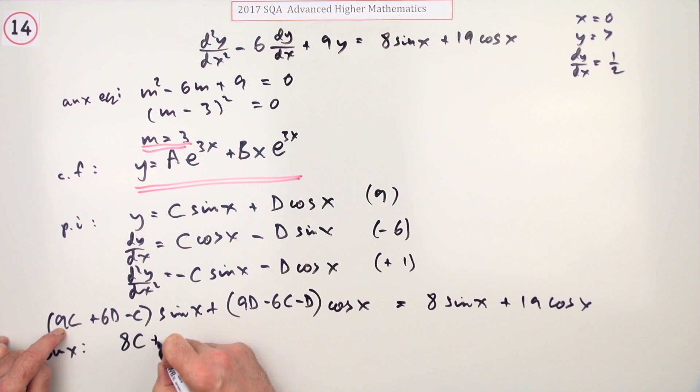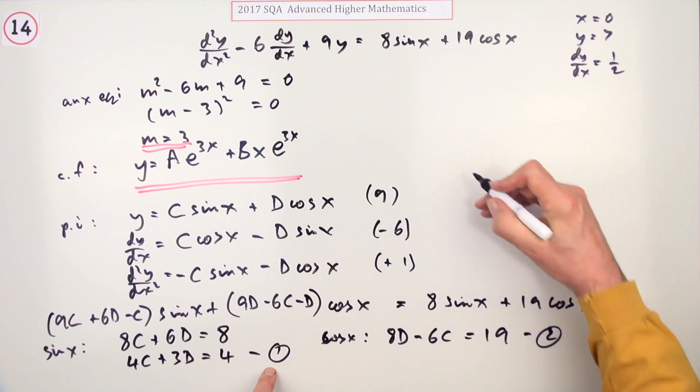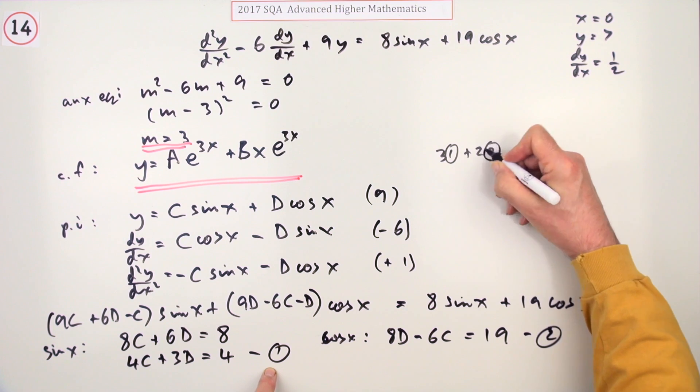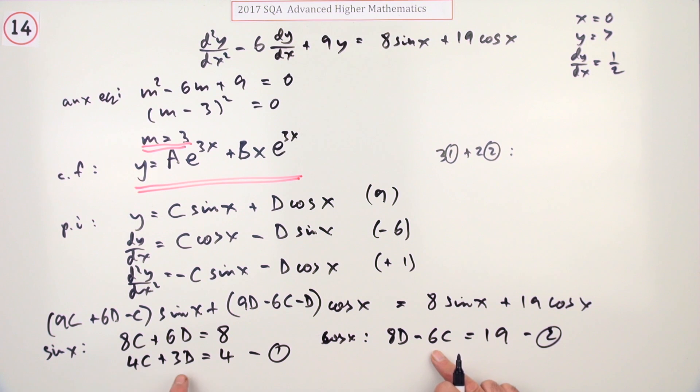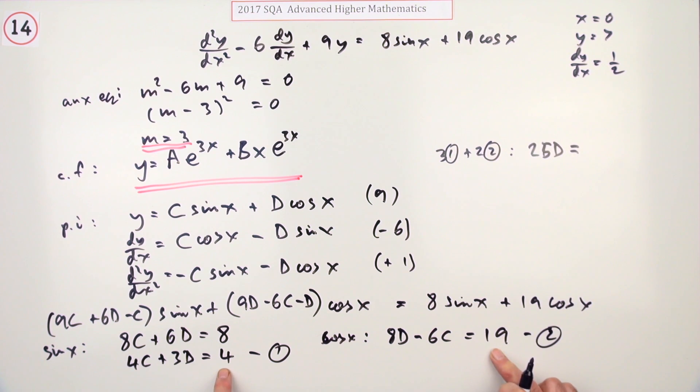Looking at the sine x terms, I have 8C plus 6D should equal 8. Tidying that up: 4C plus 3D should equal 4. Looking at the cos x terms, 8D minus 6C should equal 19. I'll have to do three of one and two of the other. If I've got three of them that's 9, two of them that's 16, so 25D equals 12 plus 38 which is 50.